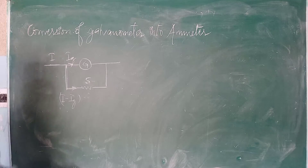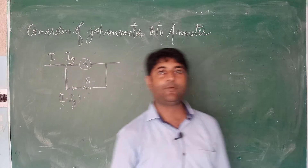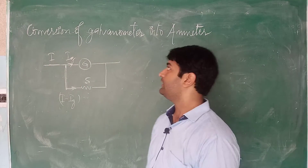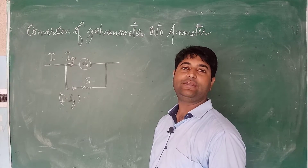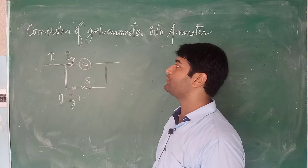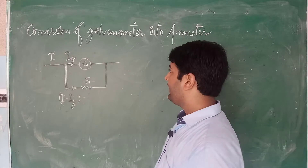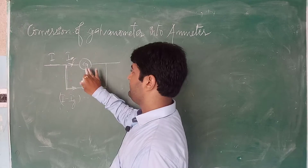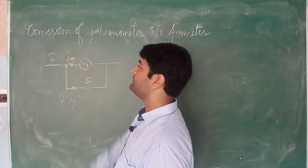So here you can see a figure. The figure is very important. Sometimes when the question arises from conversion of galvanometer into ammeter, we should also have a proper circuit diagram. We have a galvanometer, and the galvanometer has a resistance G.